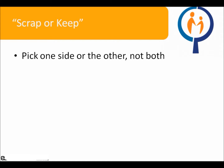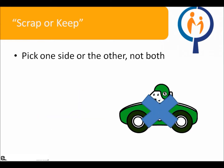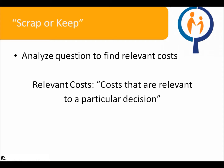Our first relevant decision-making scenario involves systematically determining whether we should scrap or keep a resource. With scrap-or-keep questions, it is important to remember to pick one side or the other, not both. For example, if your car was on its last limbs and you were left with the decision of either scrapping it or keeping and repairing it, analyze the question as though you were keeping it, or analyze it as though you were scrapping it. Regardless of the point of view you take on, the answer and decision should be the same. Once you have picked a side, analyze the question to find its relevant costs. Relevant costs are costs that are actually relevant to a particular decision — for example, the cost of the bagel you had for breakfast is generally irrelevant when deciding whether to scrap or keep your car.